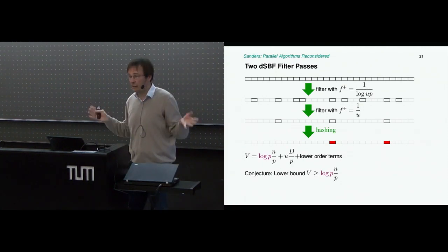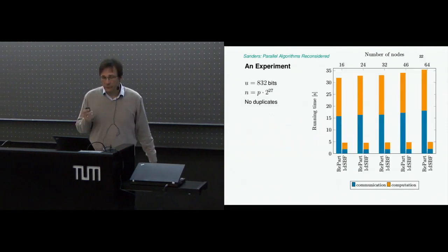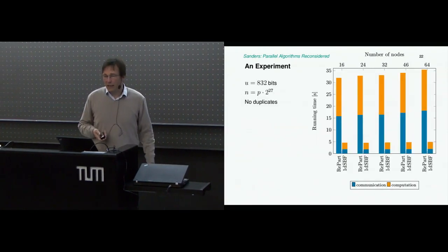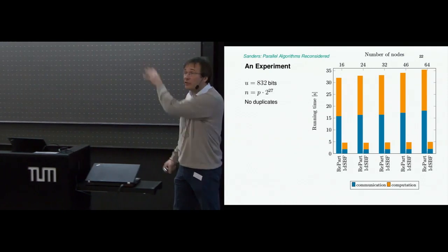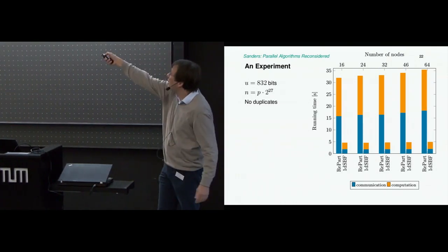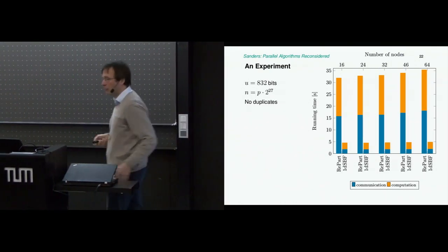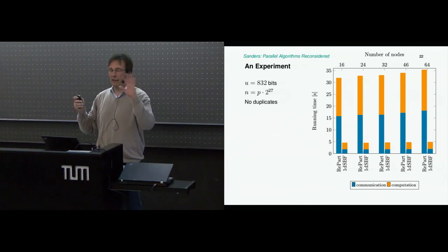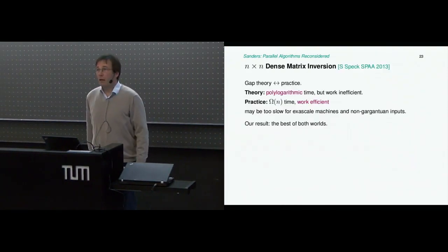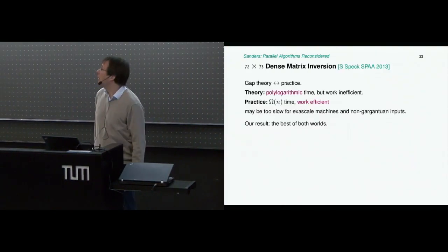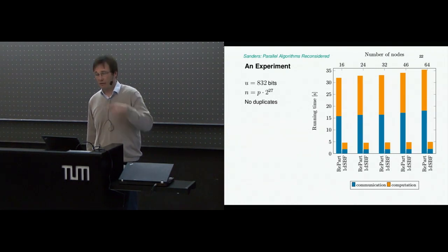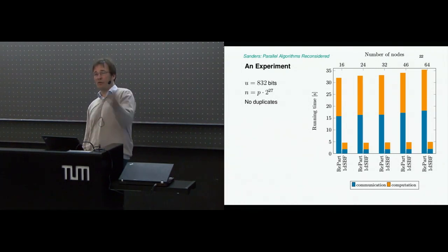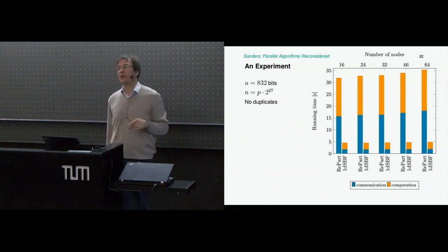Duplicate detection is the prototypical problem in communication complexity—not something exotic, it's what the community worked on most—but they haven't looked at this model, and the results are very different from other models. The implementation needs a lot of tuning, but then you can really win a lot. If there are questions on the concrete duplicate detection, I could take them now, but otherwise let me move to the next topic.